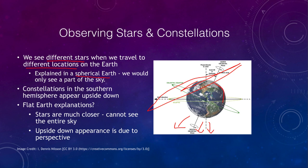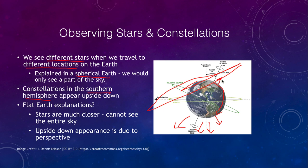If you traveled down to South America you would then be able to see those southern stars. We can also note that constellations in the southern hemisphere appear upside down. If you've ever traveled south of the equator and looked at the constellation of Orion — which is visible from both hemispheres — it is upside down in the southern hemisphere. That is because you are looking from a different perspective: you are standing in the opposite direction, essentially upside down, and therefore Orion looks upside down.